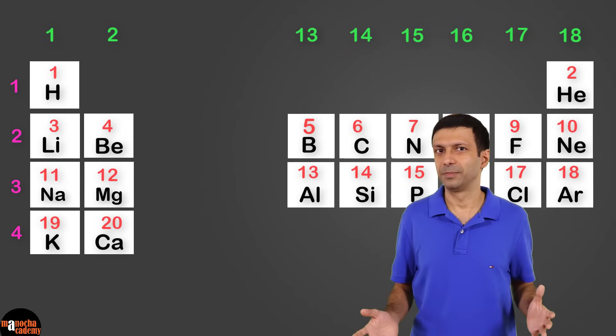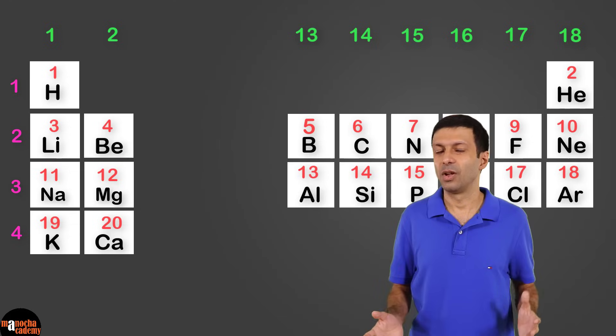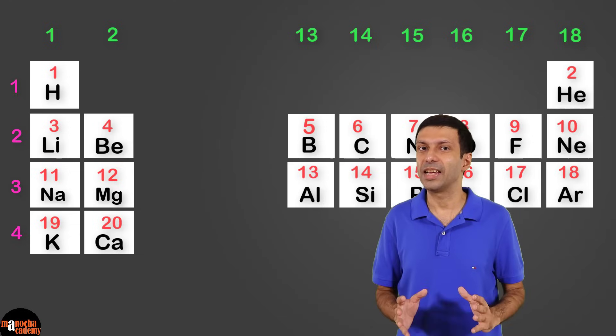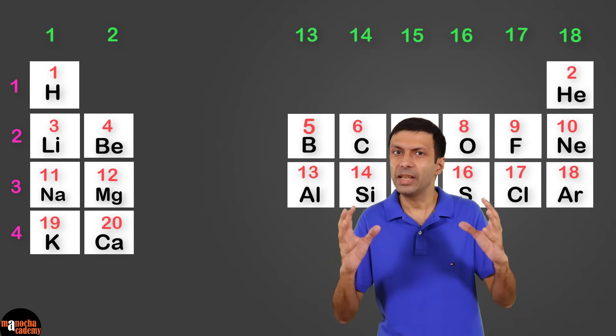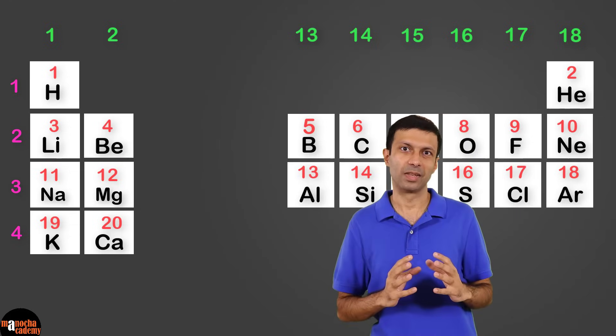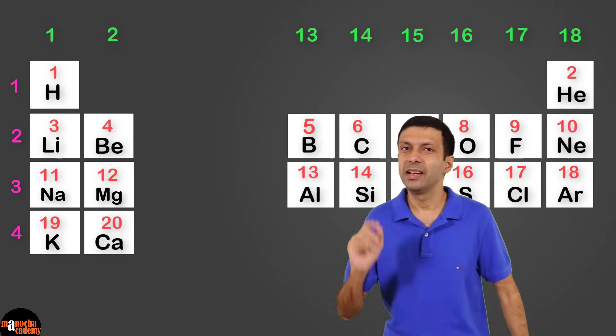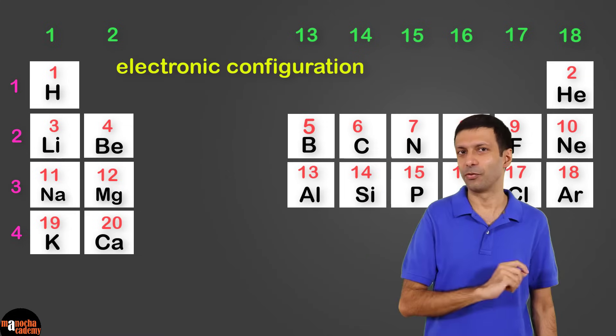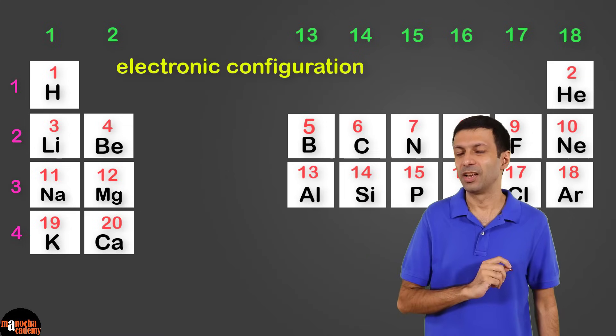Now let's move ahead to group 17. It contains non-metals and they have the same valency 1. An interesting question: why do elements in the same group have the same valency and similar chemical properties?